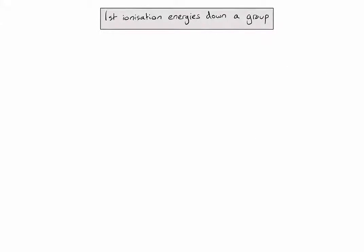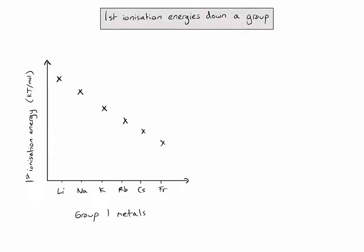So let's now draw a graph of the first ionization energies of the group one metals. And if I look in the data booklet and find those first ionization energies and plot them on this graph, they look something like this. And there is a clear general trend here of decreasing ionization energy as I go down my group from lithium to sodium to potassium, so on, down to francium. And we need to be able to explain why this is.